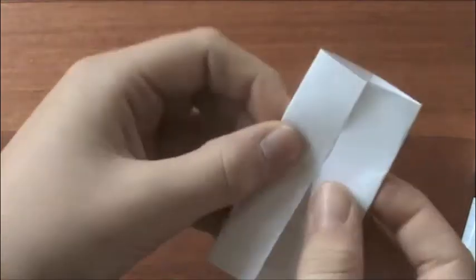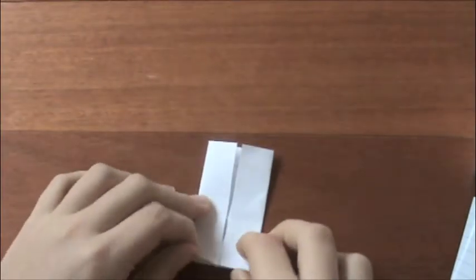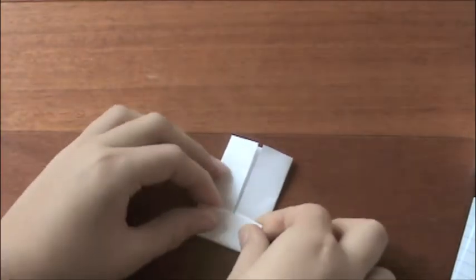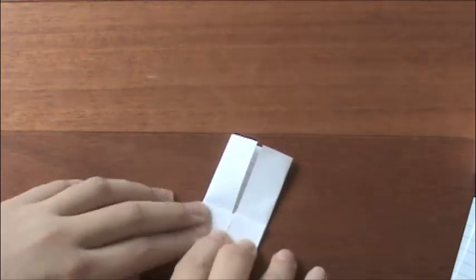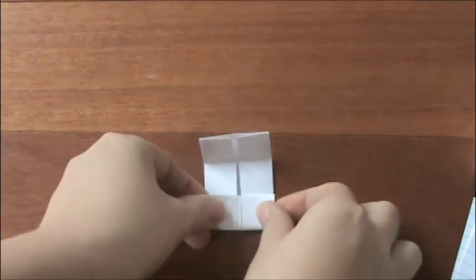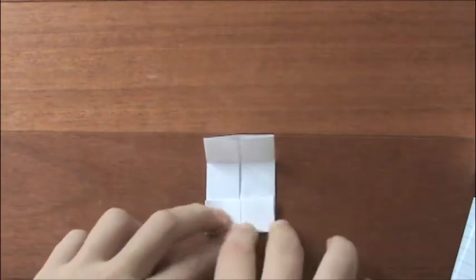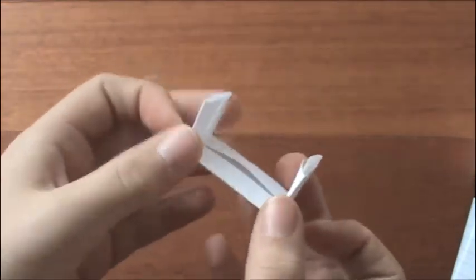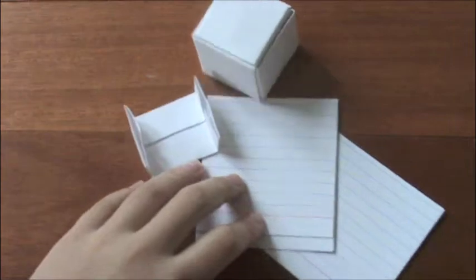Now you have them there and you will have this crease there. Next, you will want to fold these edges up to that crease in the middle. Look at that. And that is how to make the unit. It's very simple. You need to make six of these using the remaining five pieces of paper.